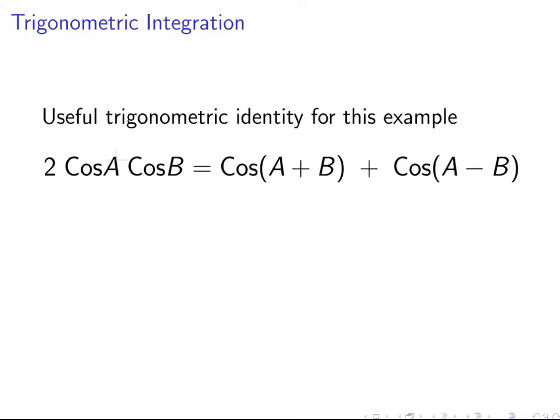So this is the one that will come in most obviously useful. Two times cosA cosB is equal to cos(A plus B) plus cos(A minus B). So we are going to use that. How does that work for us?